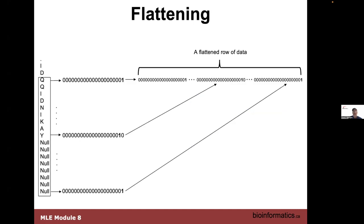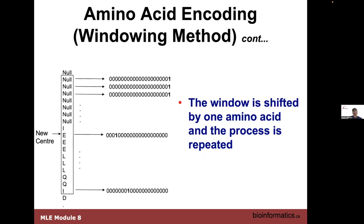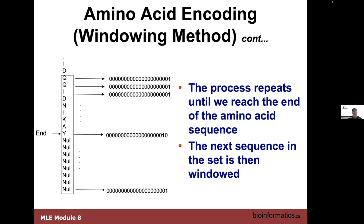Here's what our flattened vector looks like — obviously the slide is too small to show all 357 characters, but you can see how we've mapped all the amino acid vectors of 21 into one long vector. Then we just shift one residue at a time to create another vector. If the sequence is 100 residues we do it 100 times, giving us vectors of 357 times 100. That's the windowing method — a repeat from what was done before.